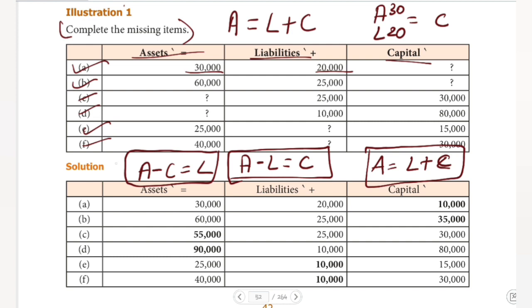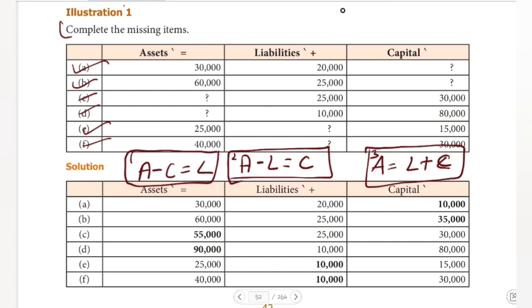So we have three equations: one, two, and three. From these three equations, we learn the number. This is the main thing we need to know.